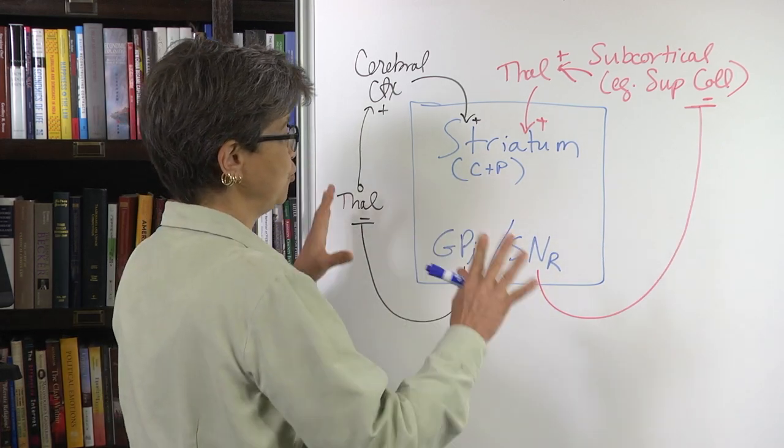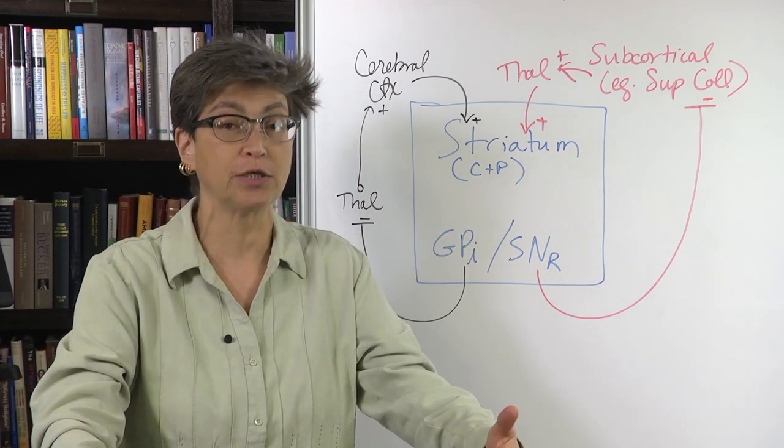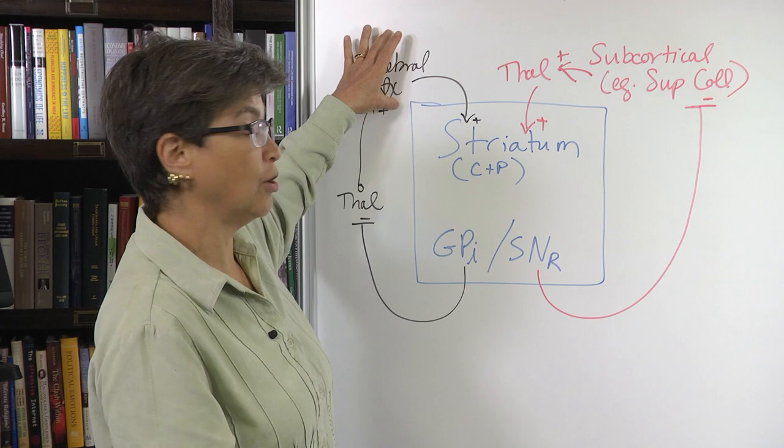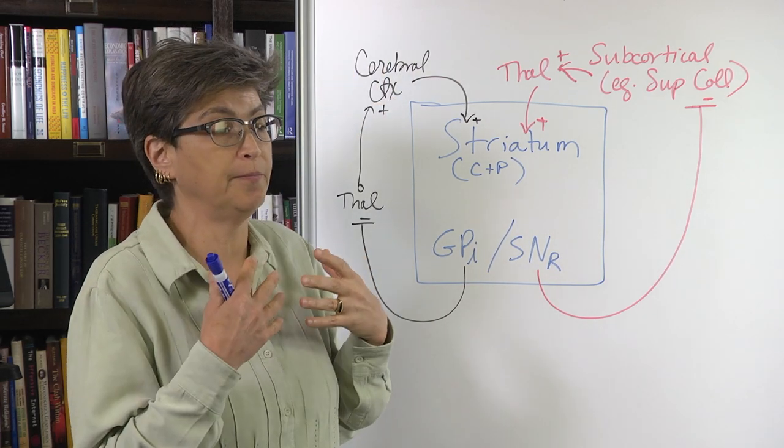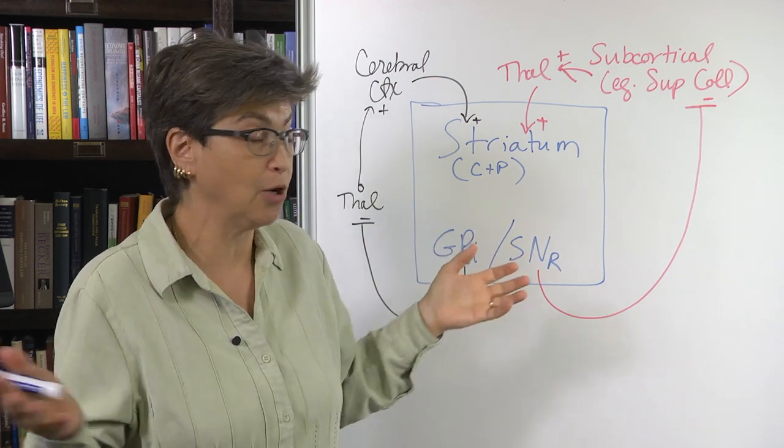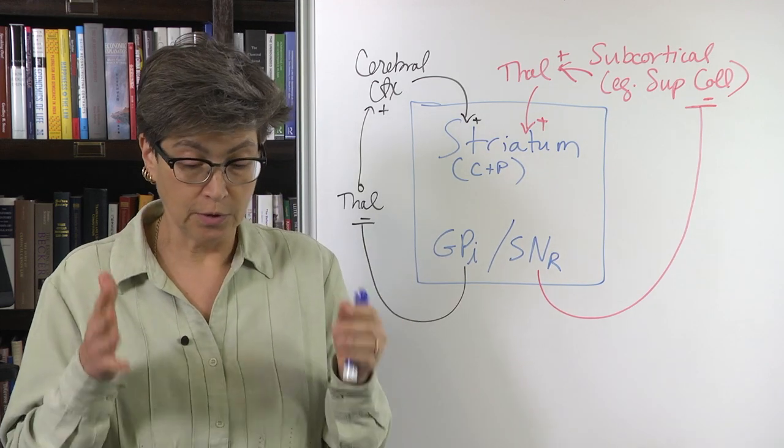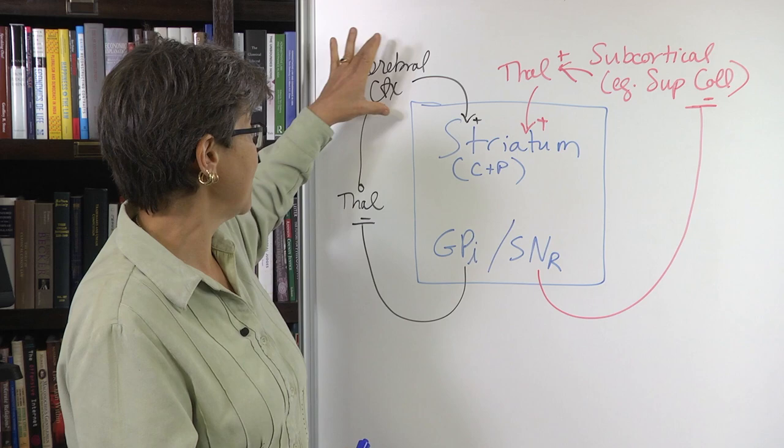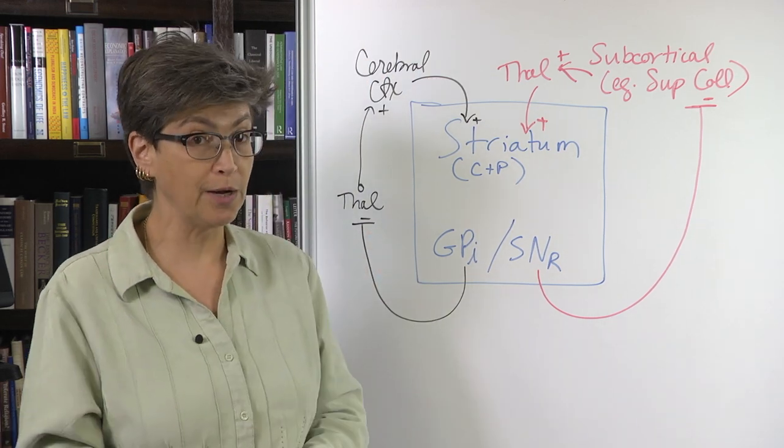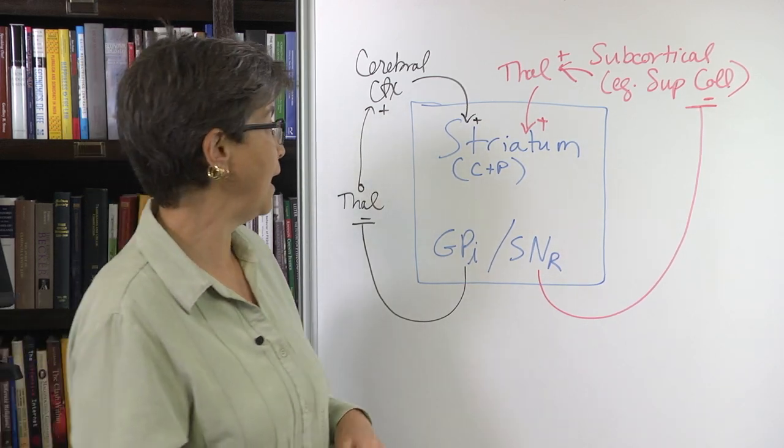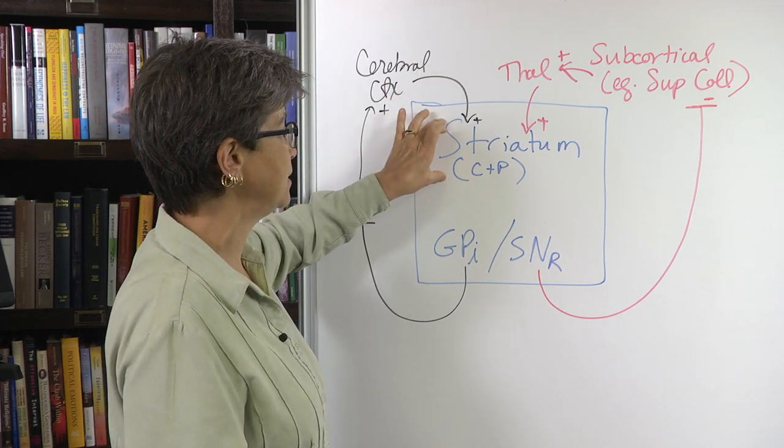There are two basic areas that can talk to the basal ganglia. One is areas in the cerebral cortex, and that's what we'll focus on. When we talk about the skeletal motor loop, which is the loop we will spend most of our time on, that comes from the cerebral cortex, from primary motor cortex. It also comes from other areas such as frontal eye fields. The input from the cerebral cortex goes directly into the striatum.